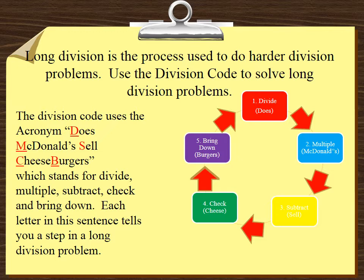The division code uses the acronym Does McDonald's Sell Cheeseburgers, which stands for divide, multiply, subtract, check, and bring down. Each letter in this sentence tells you a step in a long division problem. Once you complete the steps, you go back to the original and start over if you have numbers left.